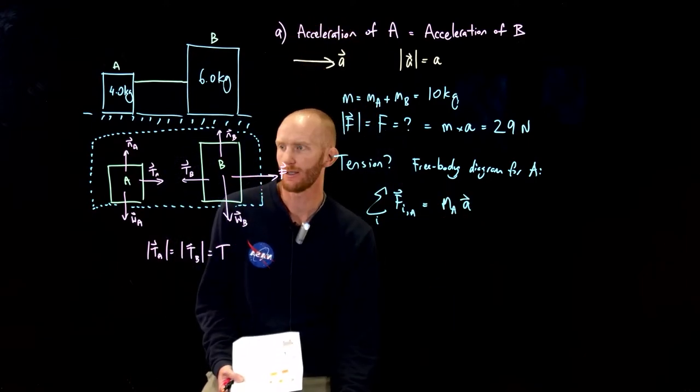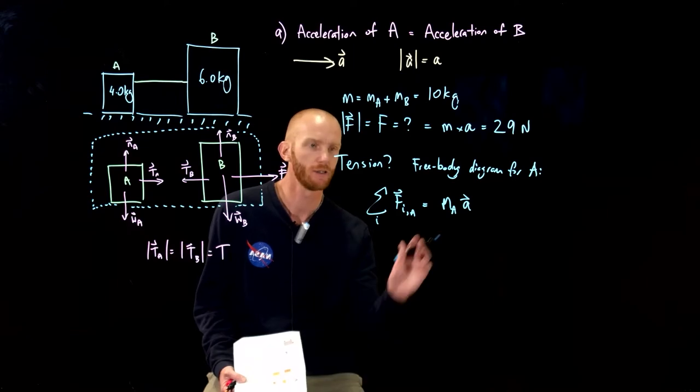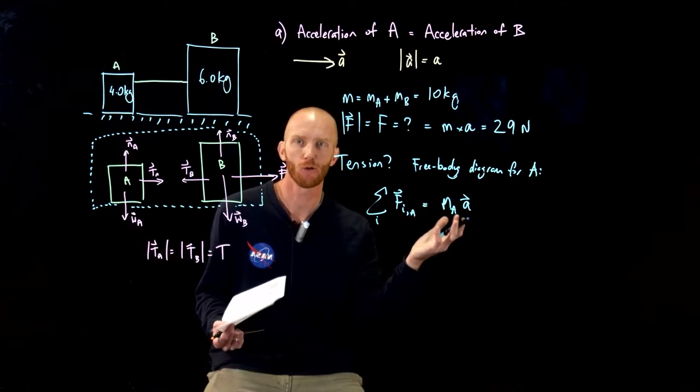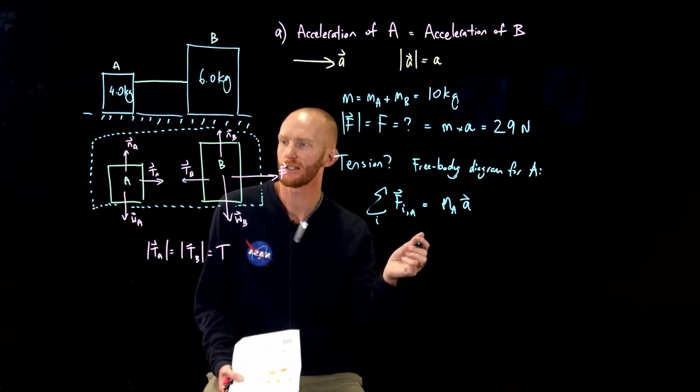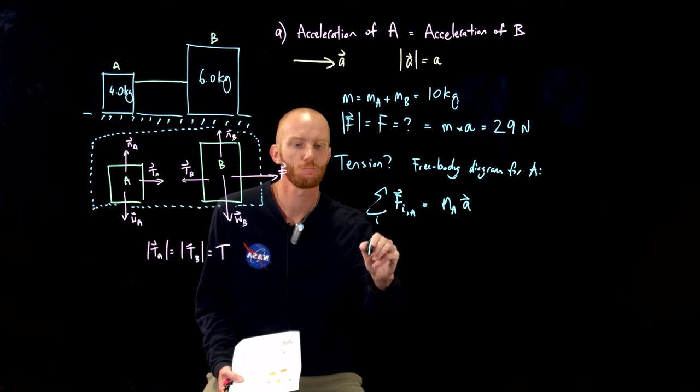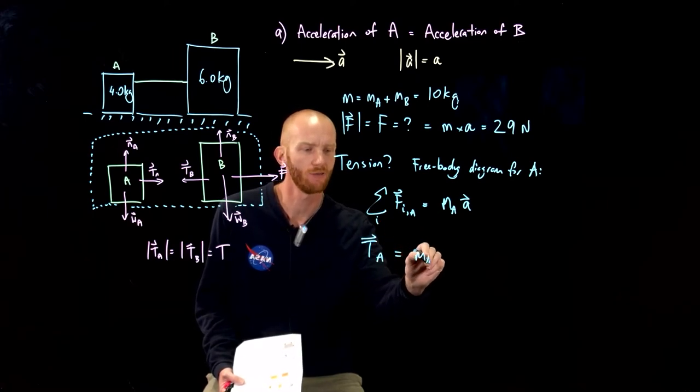This is really simple because the vertical components cancel. The box isn't accelerating up or down. We just have the tension force which is the only horizontal force acting on A equal to the mass of A times this acceleration.